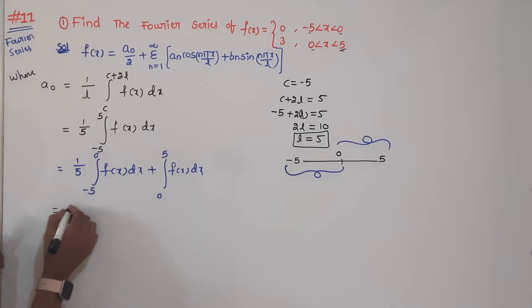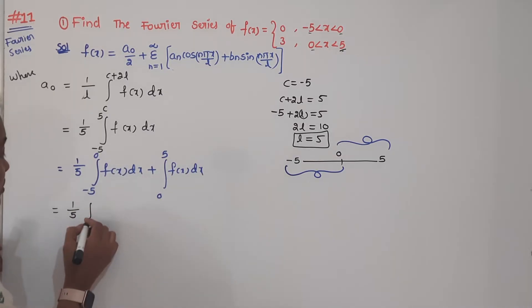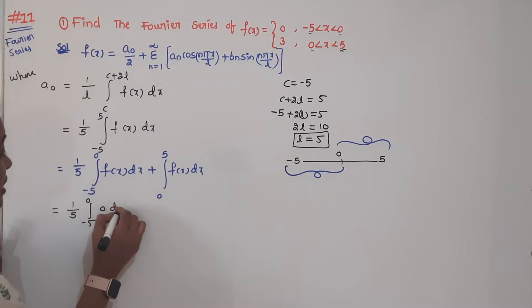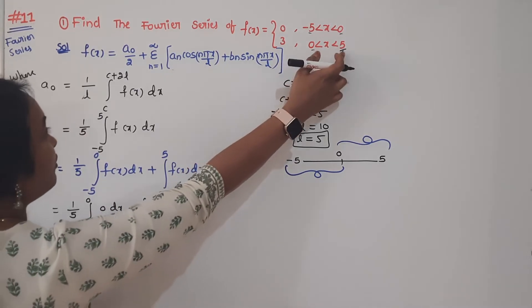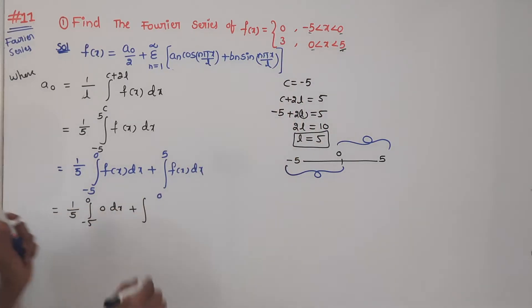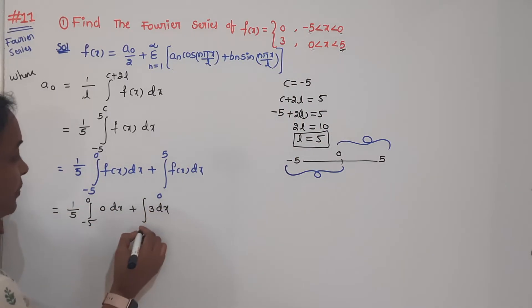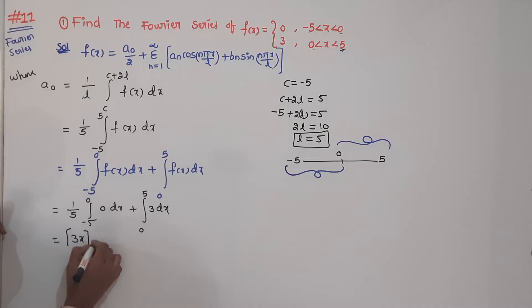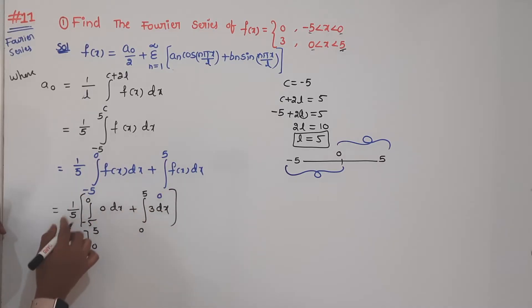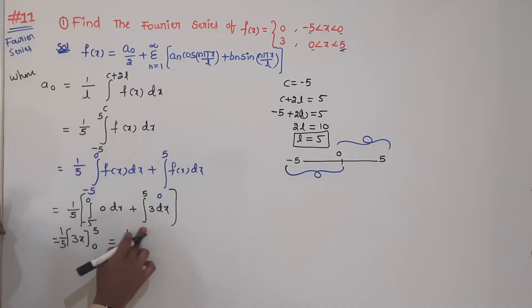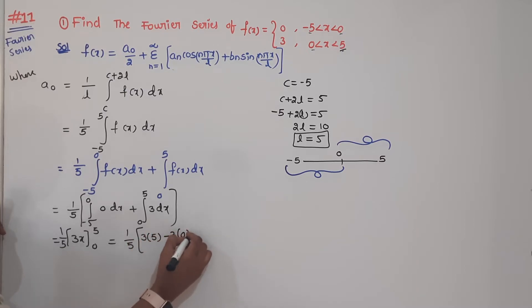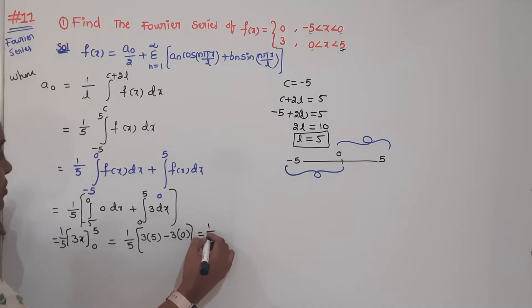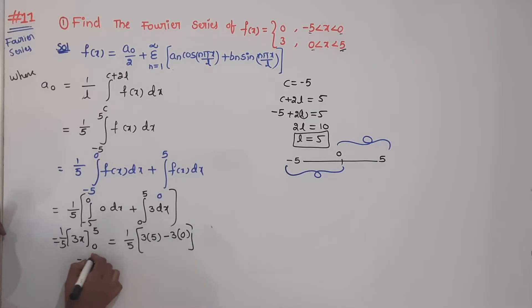Substitute the function values. When x lies in minus 5 to 0, the function is 0. When x lies in 0 to 5, the function value is 3. So the first integral (minus 5 to 0) goes to 0. We are left with 1 by 5 times the integral from 0 to 5 of 3 dx, which gives 3x with limits 0 to 5.